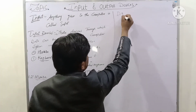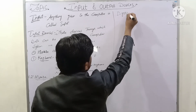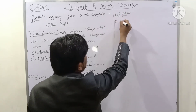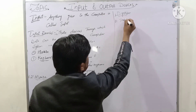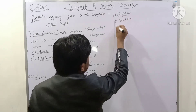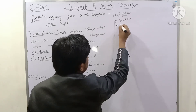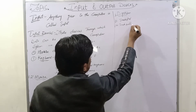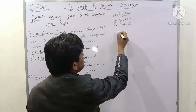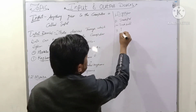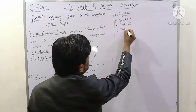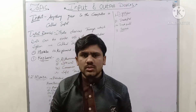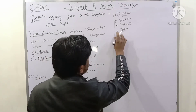Digitizer, trackball, and trackpad are also input devices. Joystick is also an input device similar to a mouse, and it is used to play games.